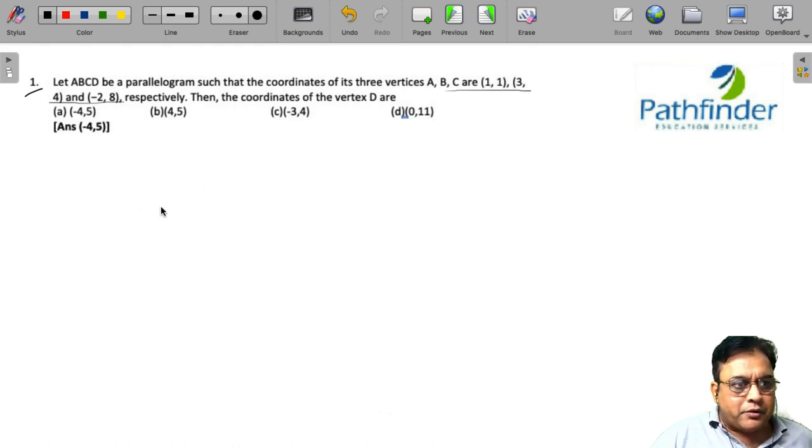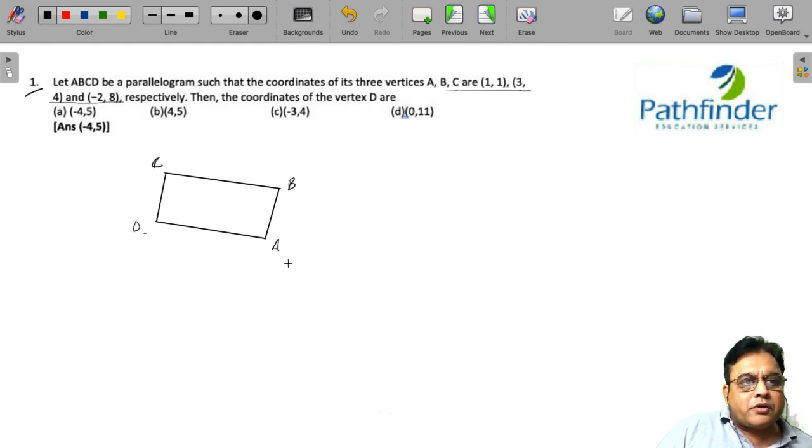So we draw a parallelogram and we have three vertices A, B, C, and we need to know the coordinate of vertex D. Here it is (1,1), this is (3,4), this should be (-2,8), and this is not known (x,y).